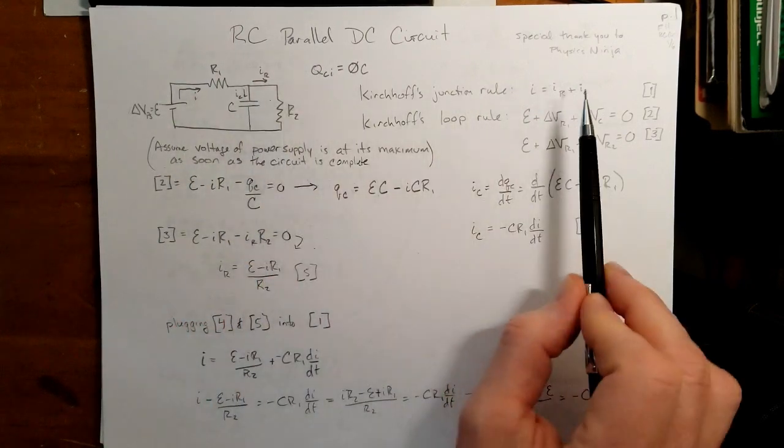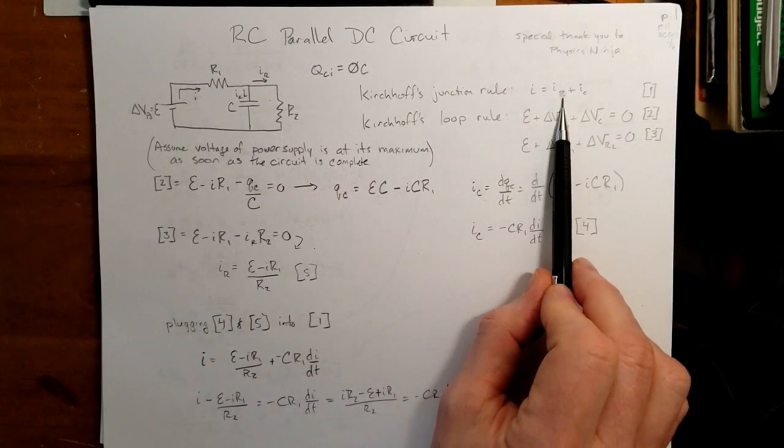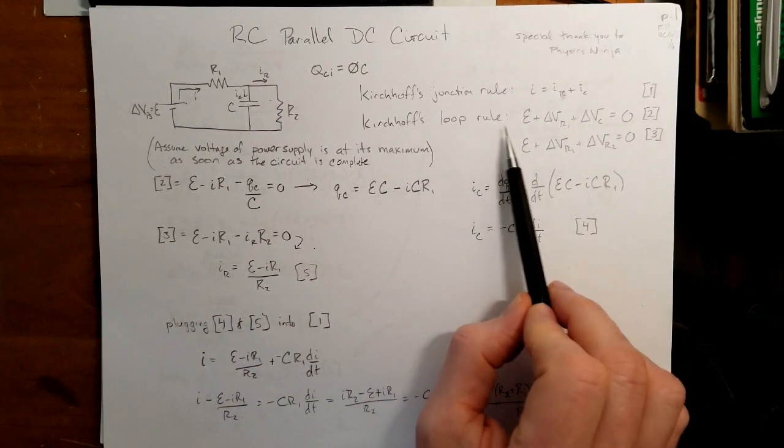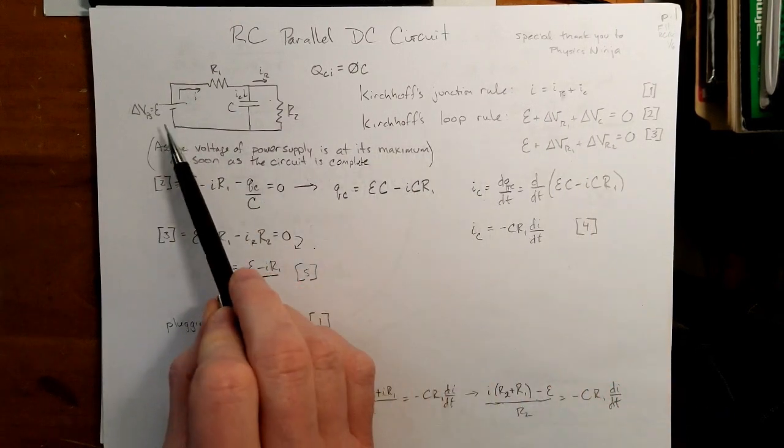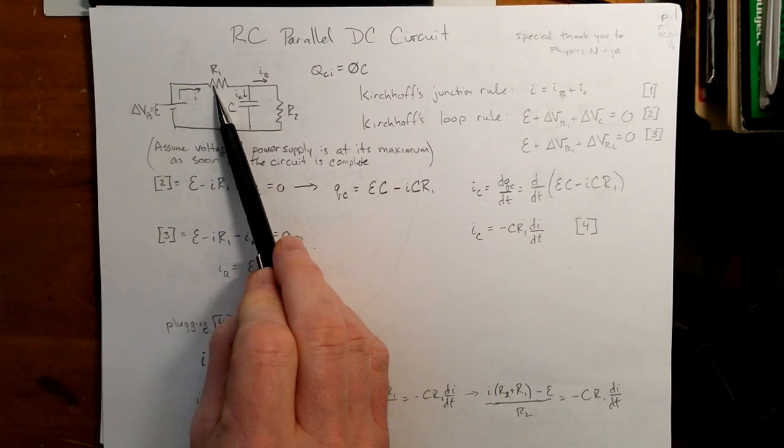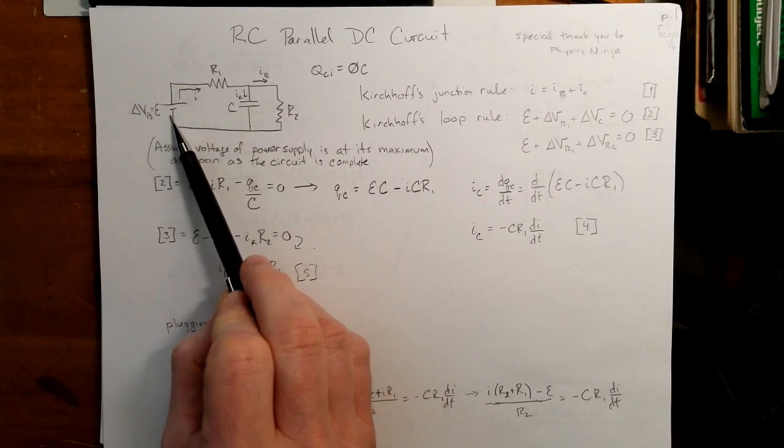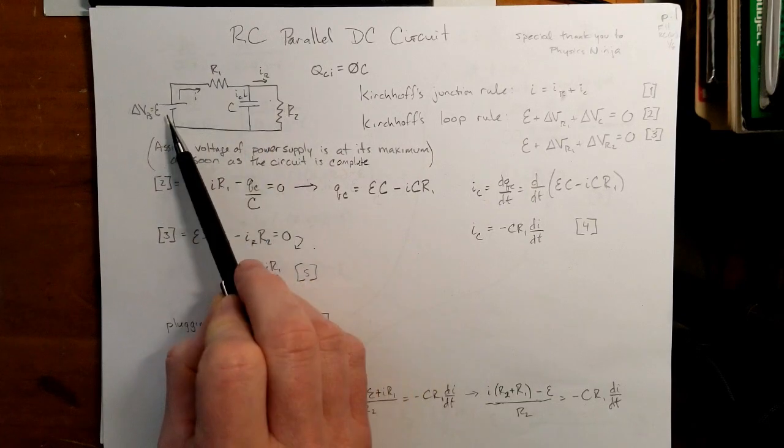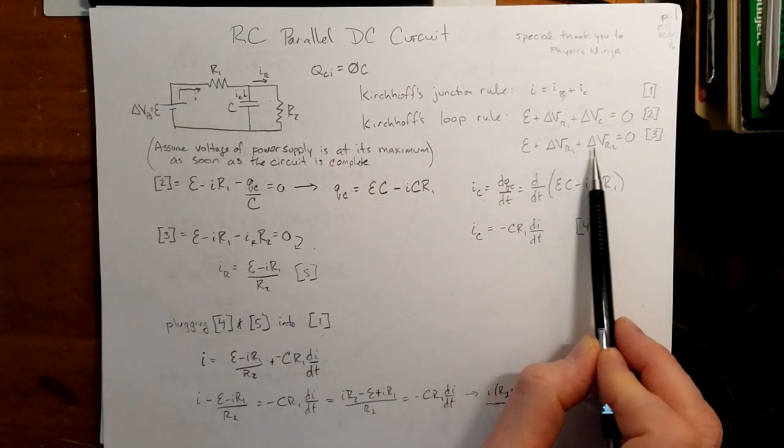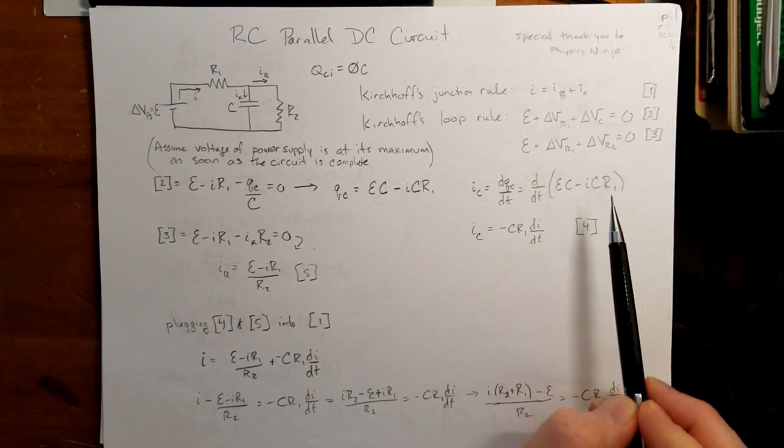So the junction rule, looking at that junction, is that I is equal to IR plus IC. The loop rule is that epsilon plus delta V R1 plus delta V C is equal to 0, or if I went the outer loop here, epsilon plus delta V R1 plus delta V R2 is equal to 0.